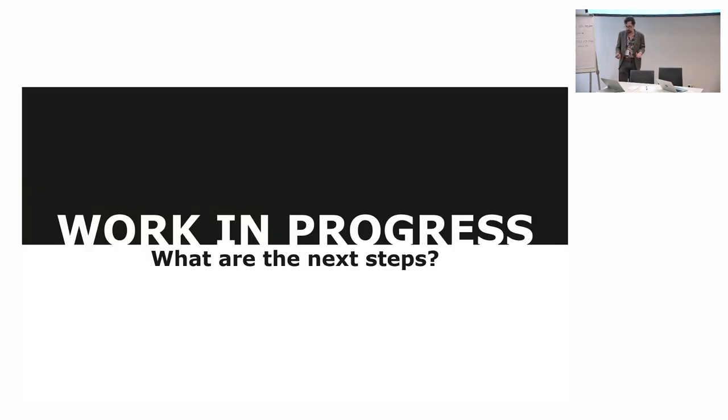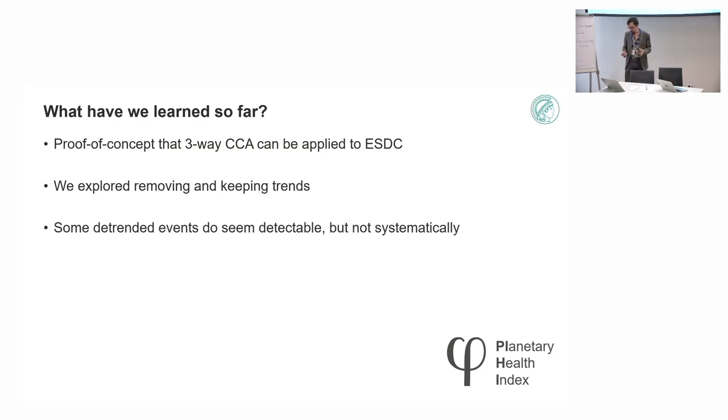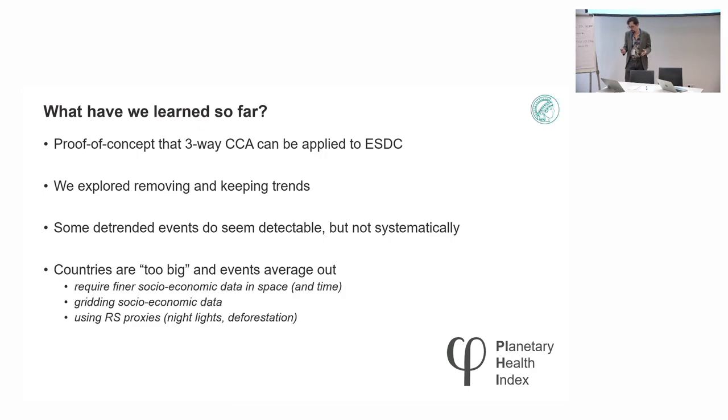So working progress and what are the next steps? What have we learned so far? We basically see that I have a bit of a proof of concept that this three-way CCA can be applied to the Earth System Data Cube. We did some exploration, also removing or keeping trends, because that's another question, whether in the socioeconomic data, a lot of the info that comes out is actually trends of development indicators that all go pretty much in the same sense. Is that a feature that we want to keep in this or should we remove and just see the anomalies? We see that some of the extreme events do seem detectable, like the ones I mentioned, but it's not systematic.